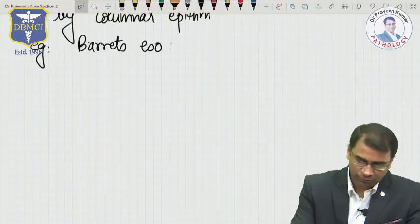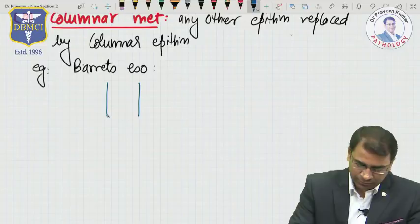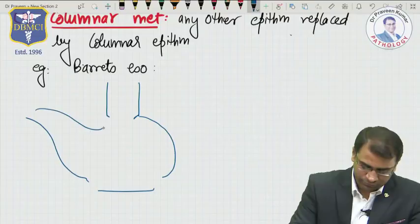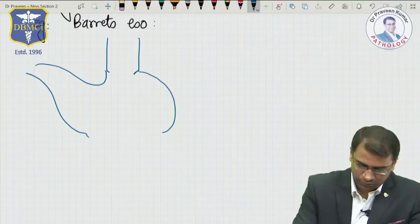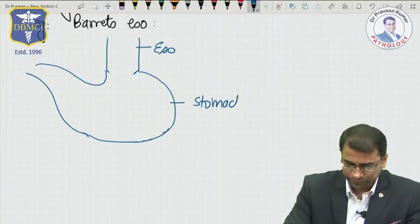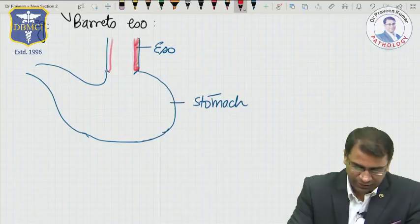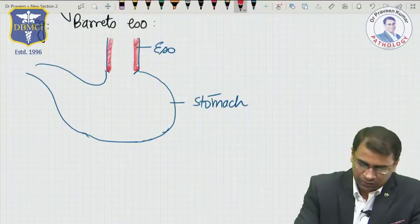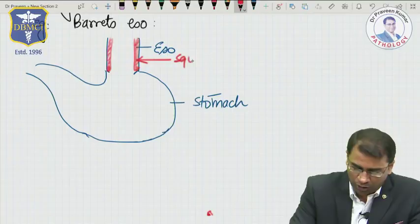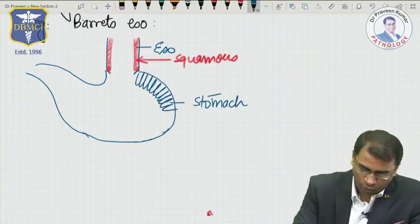To understand Barrett's Esophagus, let's draw the esophagus and see what happens. This is the esophagus part and this is the stomach part. In the esophagus, there is squamous epithelium. But when the epithelium reaches the stomach, it will change to columnar epithelium.